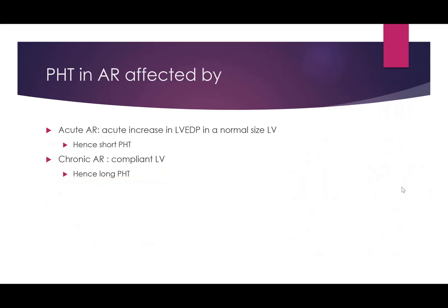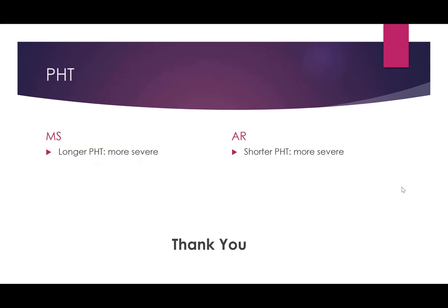In acute AR, there is an acute increase in LV end-diastolic pressure in a normal-sized LV that cannot accommodate the increased end-diastolic volume, resulting in a short pressure halftime. In chronic aortic regurgitation, a compliant LV can accommodate the increased end-diastolic volume, so LV end-diastolic pressure rises more gradually and we get a longer pressure halftime.